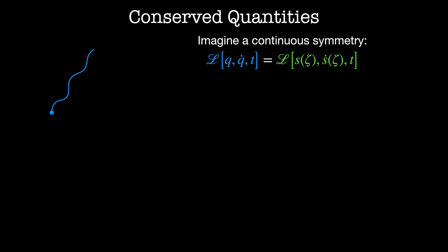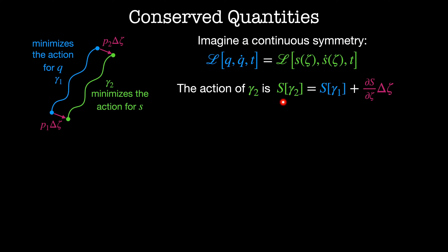Here's a path. Let's call it gamma 1. Gamma 1 is the path that minimizes the action for the coordinates q. This path here, gamma 2, minimizes the action for the coordinates s. Let's look at what happens if we expand s for small values of zeta. Then the difference between the starting points of the two paths is equal to p1 times delta zeta and the difference between the end points of the two paths is equal to p2 times delta zeta. The action of the path gamma 2 is equal to the action of the path gamma 1 plus dS by dZeta times delta zeta. If s of zeta really is a continuous symmetry of the system, then by definition the action of the second path is equal to the action of the first path.